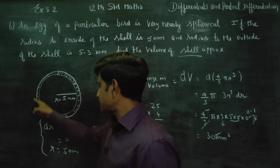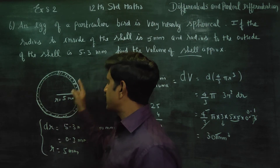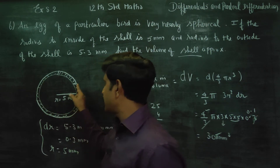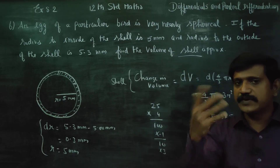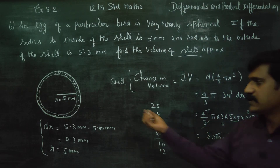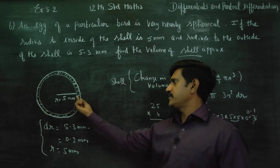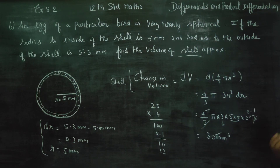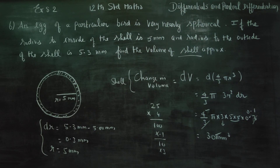Volume of the outer sphere minus volume of the inner sphere gives the volume of the shell. We use the differential approach: change in volume represents the shell's volume. We use the concept of the differential of the outer sphere. Thank you.